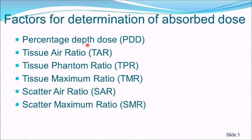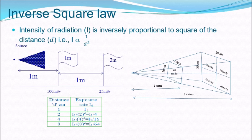The factors we are going to look at are: percentage depth dose (PDD), tissue air ratio, tissue phantom ratio, tissue maximum ratio, scatter air ratio, and scatter maximum ratio.